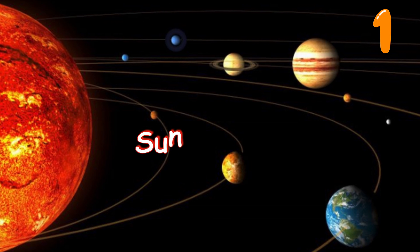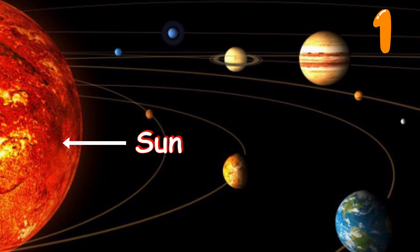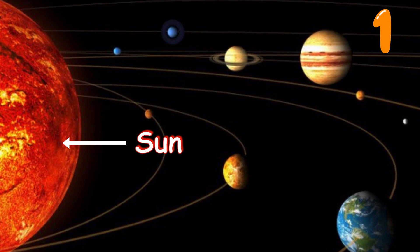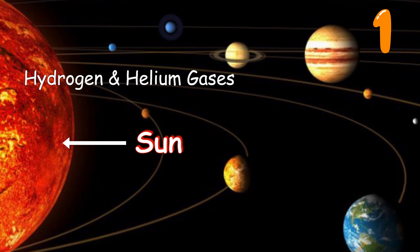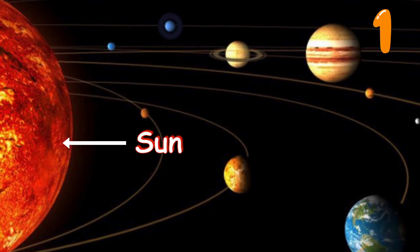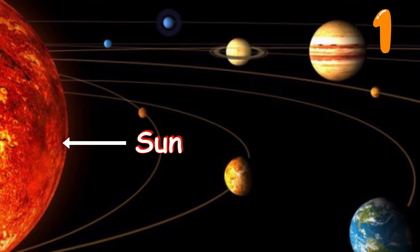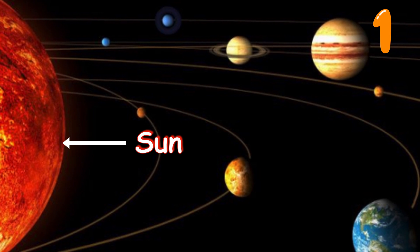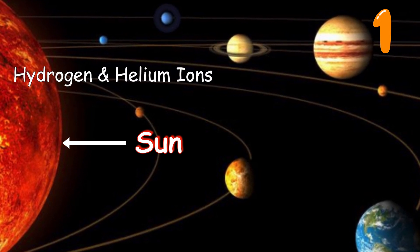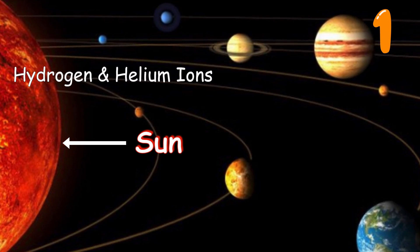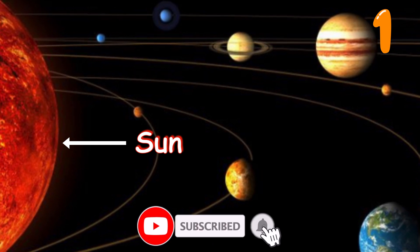Number one: the sun — the biggest ball of plasma you can find. The sun consists of hydrogen and helium gases, and its enormous heat rips electrons off from these atoms. This makes the hydrogen and helium gases into hydrogen and helium ions, creating a big ball of plasma.